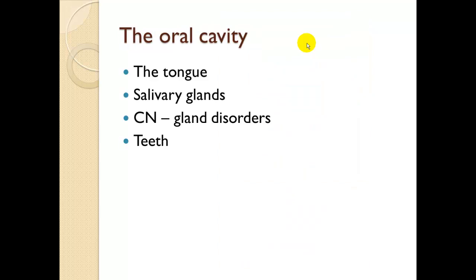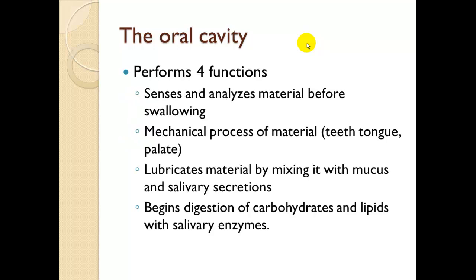The oral cavity includes the tongue, the salivary glands, and the teeth. The oral cavity performs four functions: it senses and analyzes material before swallowing; it mechanically processes material via the teeth, tongue, and palate; it lubricates material by mixing it with mucus and salivary secretions; and it begins digestion of carbohydrates and lipids with salivary enzyme — specifically salivary amylase.